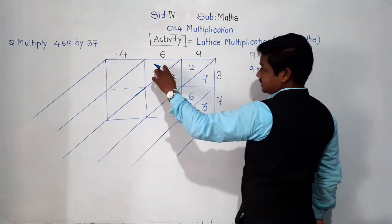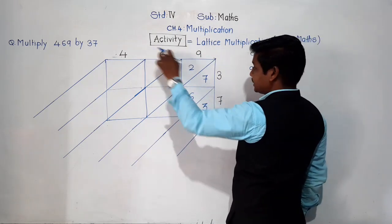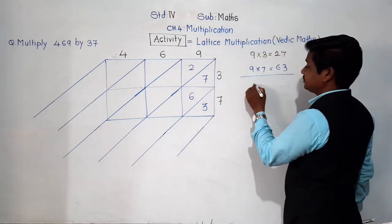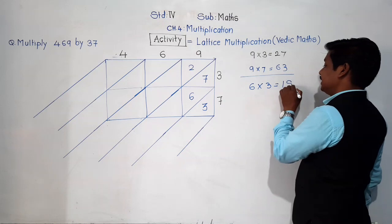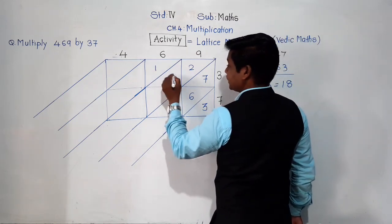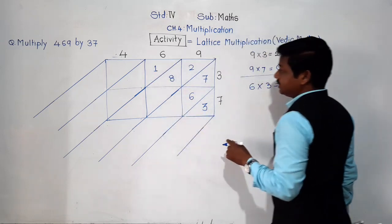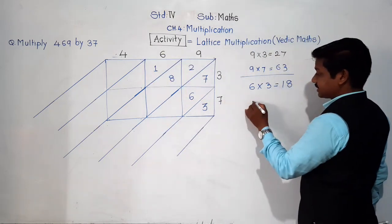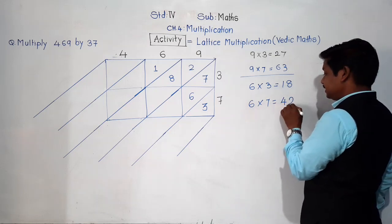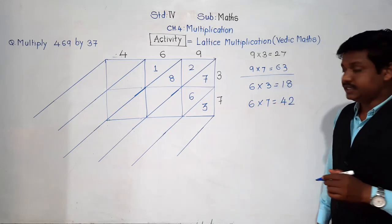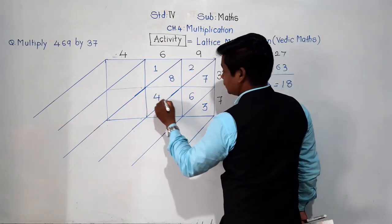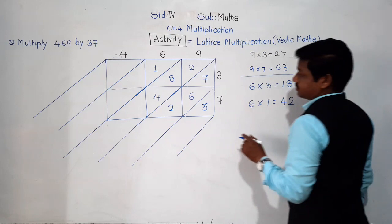Now for the middle column with digit 6: 6 × 3 = 18, so 1 goes in the upper part and 8 in the lower part. Then 6 × 7 = 42, so 4 goes in the upper part and 2 in the lower part. Finished.